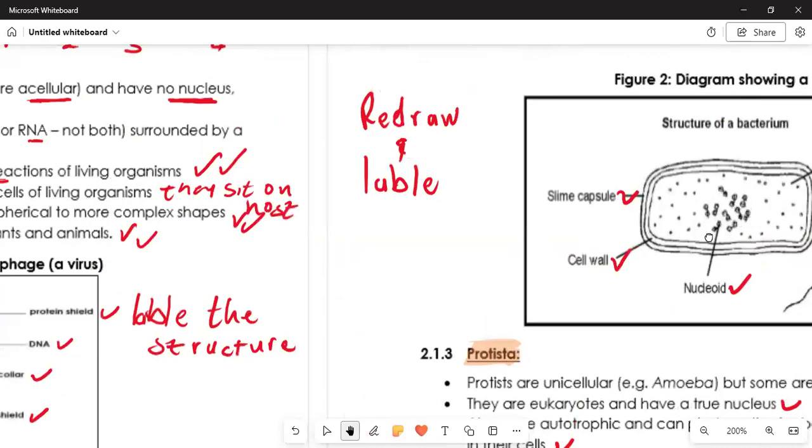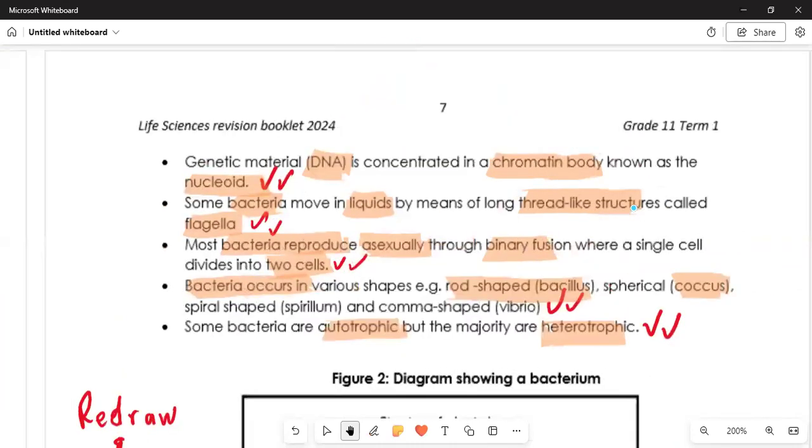The genetic material which is the DNA is carried by the chromosomes. It is concentrated in a chromatic body known as the nucleoid. Some bacteria move in liquids by means of long thread-like structures called flagella. The flagella helps to facilitate its space so that it can move more easily. It reproduces asexually through binary fission, where a single cell divides into two. A bacteria, although it is asexual, under the fusion of binary the cell ensures that there are two daughter cells that can arise.